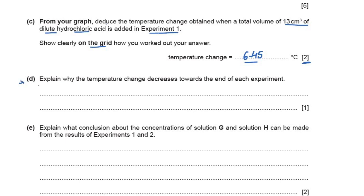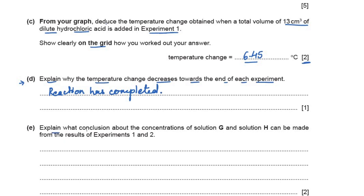Explain why the temperature change decreases towards the end of each experiment. The only reason is that the reaction has completed. You can also say that the hydrochloric acid is now in excess — because the reaction has completed, adding more HCl does not cause a temperature change. In fact, the heat spreads out through the solution and so the temperature decreases. Write: the reaction has completed.